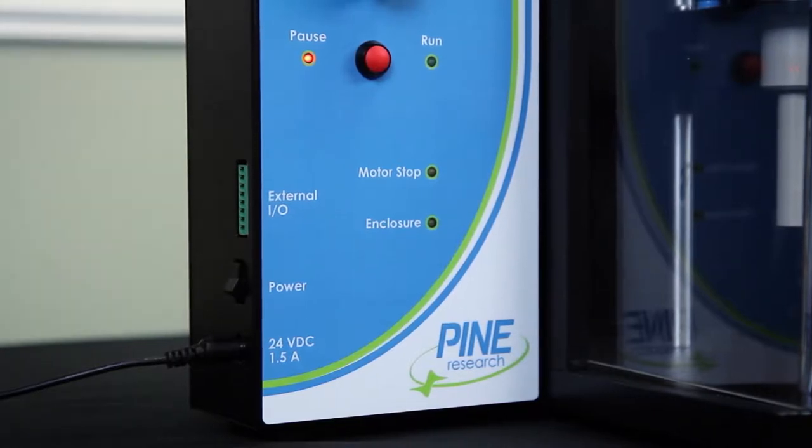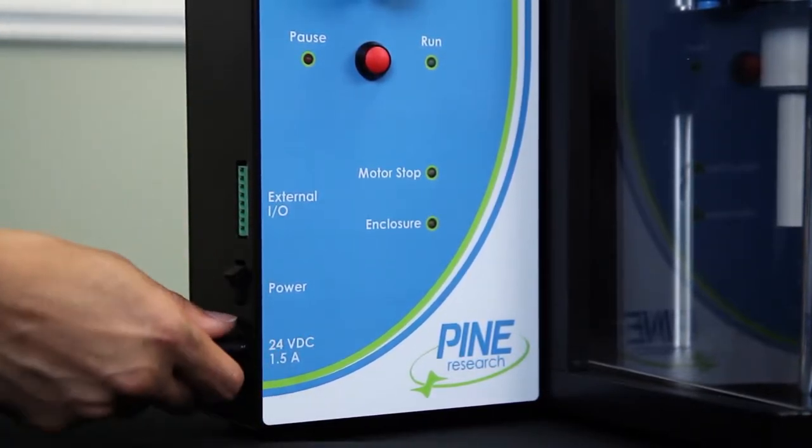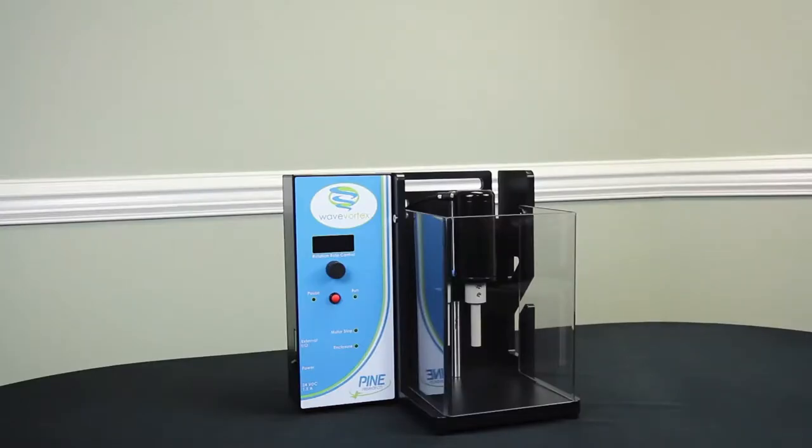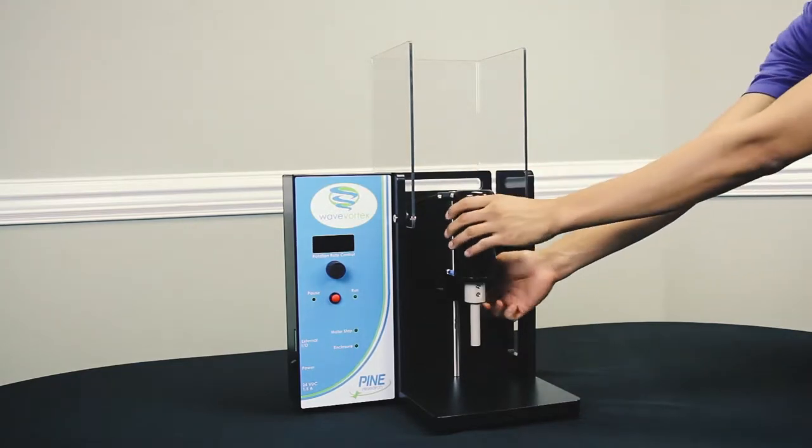First, make sure the Wave Vortex is turned off. It's easier to work with the enclosure window lifted and the motor unit positioned at the top of the support rod.